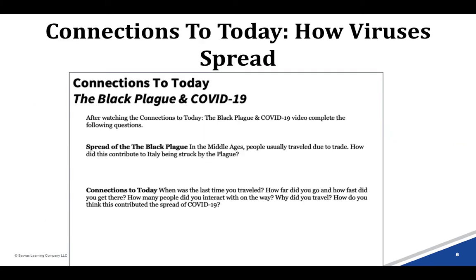In the Middle Ages, the Black Plague spread due to people's travel. Think of the way people traveled in the 1300s and why they moved from place to place — how does it compare to now? Look at how quickly the virus spread from Asia to other continents. What do you think contributed to that?